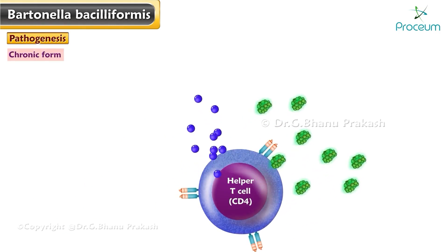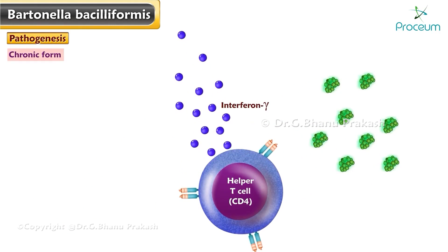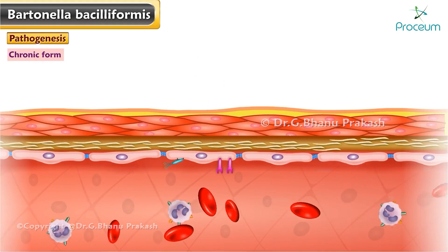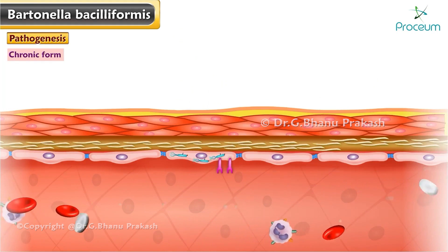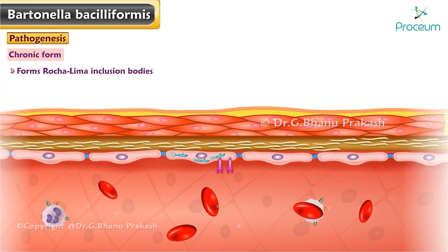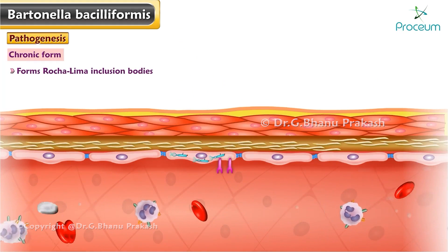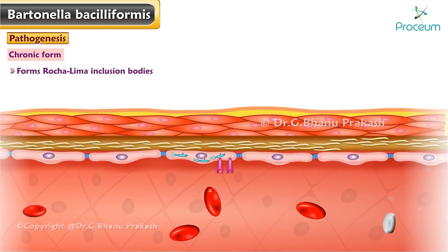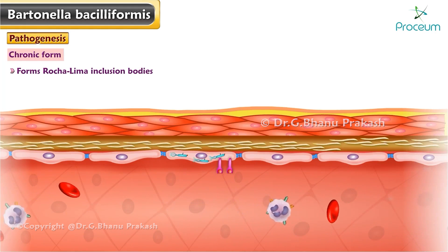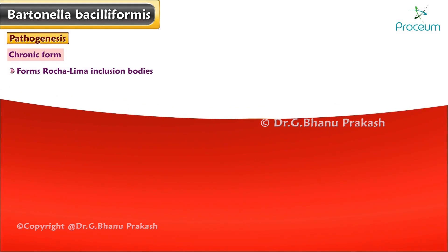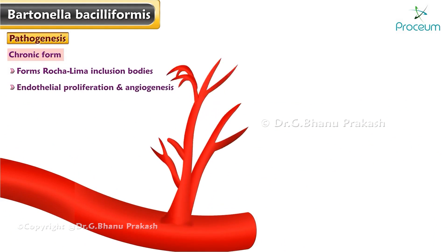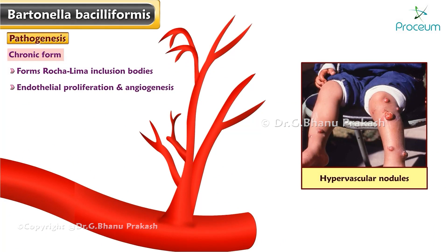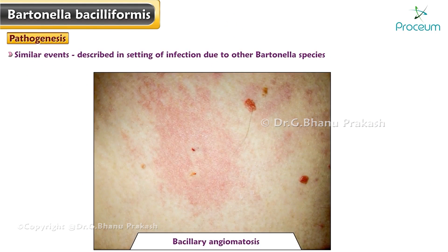During the chronic form, there are high levels of interferon gamma and interleukin-4. The bacterium invades endothelial cells, forms Rocha-Lima inclusion bodies, and causes overproduction of epidermal growth factor (EGF). The abundant production of EGF stimulates endothelial proliferation and angiogenesis, producing hypervascular nodules. Similar events have been described in infection due to other Bartonella species that cause bacillary angiomatosis.